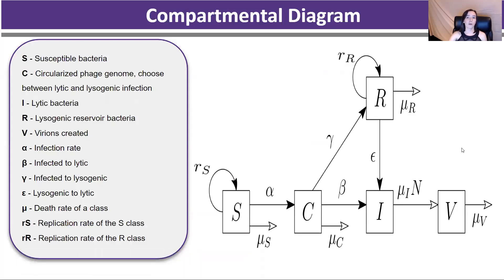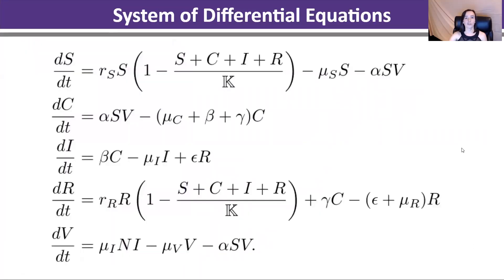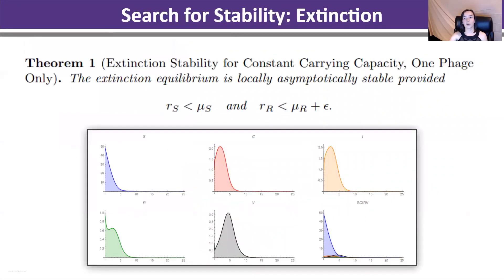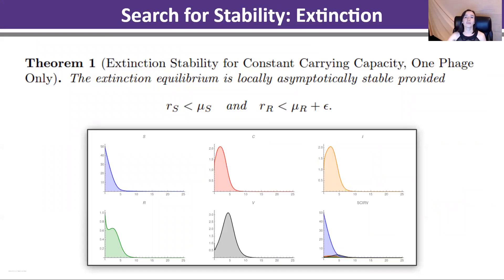To start doing this, we can model it with a system of differential equations, which we show here and which can be evaluated. Our first theorem for extinction shows that if our susceptible bacteria die faster than they can replicate, and likewise with our lysogenic — die or move into the lytic cycle faster than they can replicate — it will go into extinction in a locally asymptotically stable fashion. This is our best case scenario for treating a patient, because it means that all of our bacteria inside the patient effectively die.